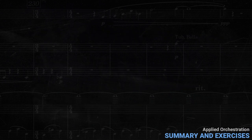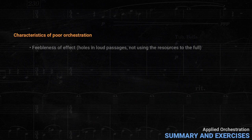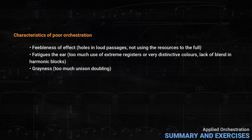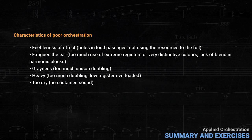On the other side, here are some signs of poor orchestration. If the overall effect is feeble — like holes in loud passages, or not using all the resources to the full — the result won't be convincing. Bad orchestration fatigues the ear, for example with too much use of extreme registers or very distinctive colors and lack of blend in harmonic blocks. Grayness is often a result of too much unison doubling. The orchestration may be too heavy, often because of too much doubling or because the low register is overloaded. Orchestration that is dry all the time is fatiguing — sometimes dry can be useful, but sometimes you need some sustained sound. It's very rare you're going to want ten minutes of music with no sustained sound.